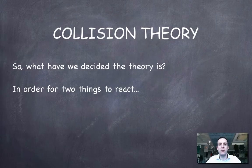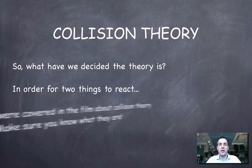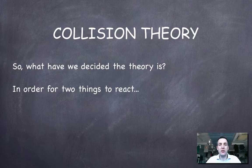As a quick reminder of what we covered in the third film about collision theory: in order for two things to react together, three things essentially have to happen. Particles had to collide, but not only did they have to collide — they had to collide with enough energy to get over the hump, in other words to exceed the activation energy. And they had to collide in the correct orientation.